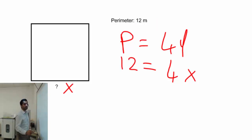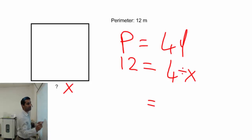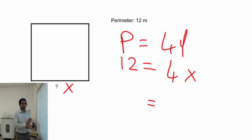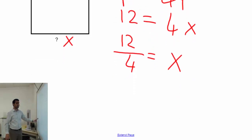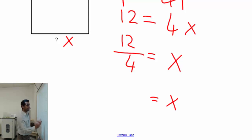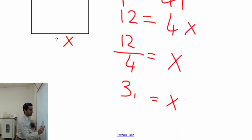To isolate x, I notice there is no addition, subtraction, or visible operation between 4 and x — that means it is multiplication. So 4, which multiplies on the right, will divide on the other side. We get x equals 12 divided by 4, which equals 3.